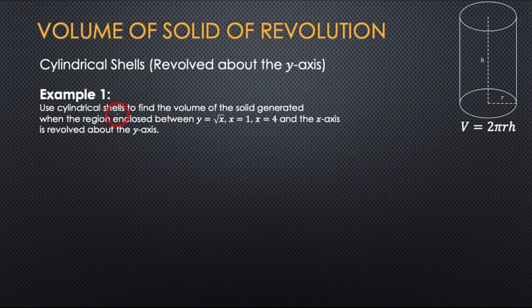Use the cylindrical shell method to find the volume of the solid generated when the region enclosed between y = √x, x = 1, x = 4, and the x-axis is revolved about the y-axis.